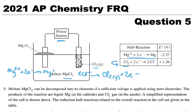Let's read the question. Molten magnesium chloride can be decomposed into its elements if a sufficient voltage is applied using inert electrodes. The products of the reactions are liquid magnesium at the cathode - so this is the cathode and that matches the fact that we decided this is reduction, because these are reduction half reactions and gaining electrons is reduction, red cat.